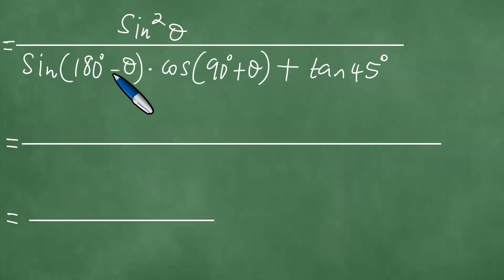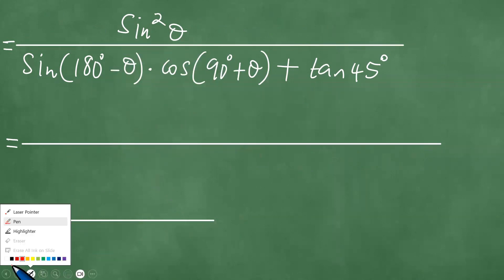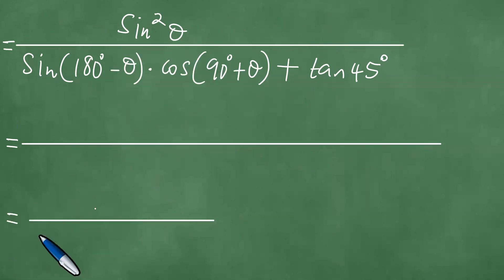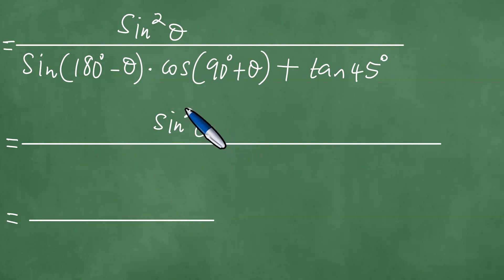If you have this particular question, what do we do? The numerator is already a single trig ratio, so we leave it as it is — sine squared of theta. The numerator is okay.